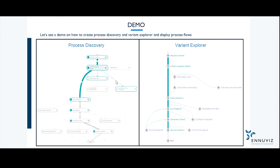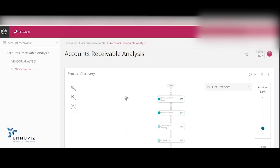Here, we can see different numbers of variants in the process. This is my happy path from process start to end. Let's see a demo on this. I need to open my process here. I've already created my investigations and given the name as Account Disable Analysis.